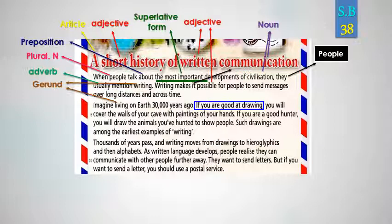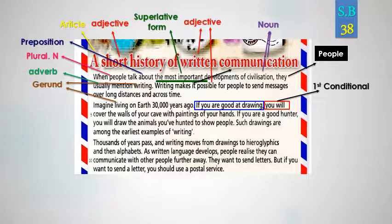Here we have: 'If you are good at drawing' — إذا كنت جيداً في الرسم. We call this the first conditional — الجملة الشرطية الأولى. This is the condition: 'if you are good at drawing.' The result is: 'you will cover the walls.' This sentence is the first conditional. 'Drawing' here is a gerund — مصدر.